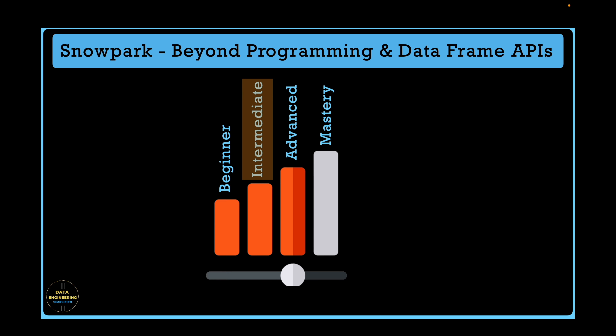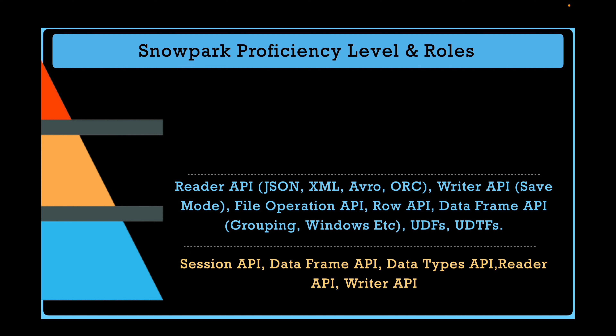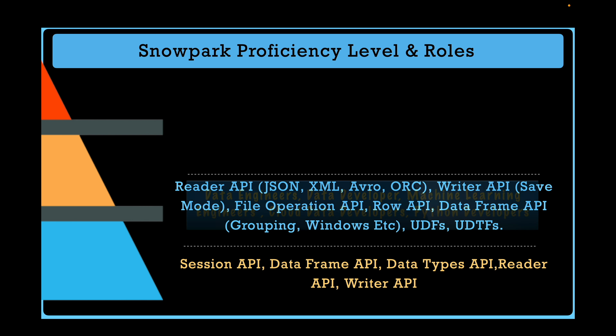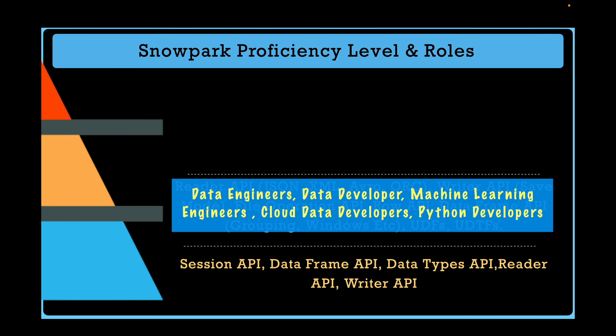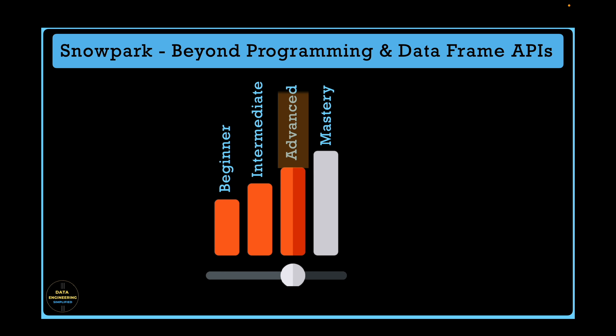At the intermediate level, the resource must know all the reader APIs — including JSON, XML, Avro, and ORC file formats — writer API that can use save mode to save data, file operation APIs to load and unload data, and all operations within the DataFrame like group by, window functions, and advanced analytical functions like rollup, in addition to beginner level proficiency. If you are a data engineer, data developer, machine learning engineer, cloud data developer, or Python developer, this proficiency level is a must for you.